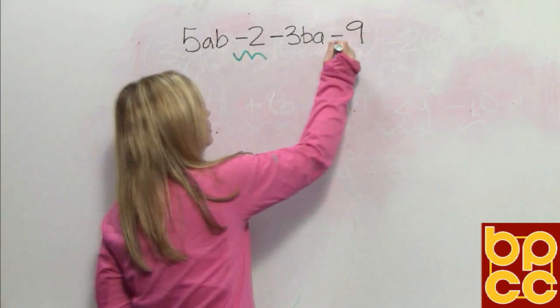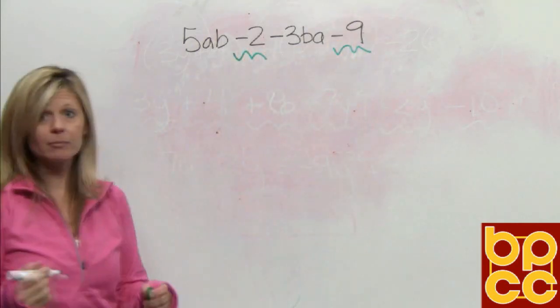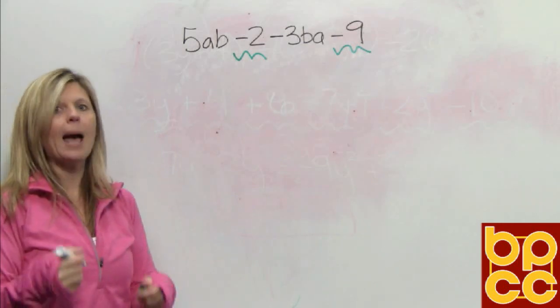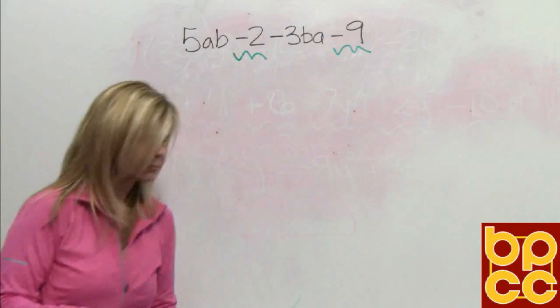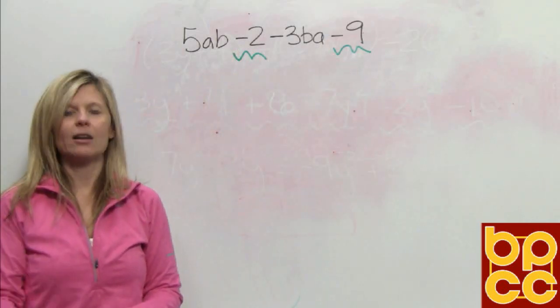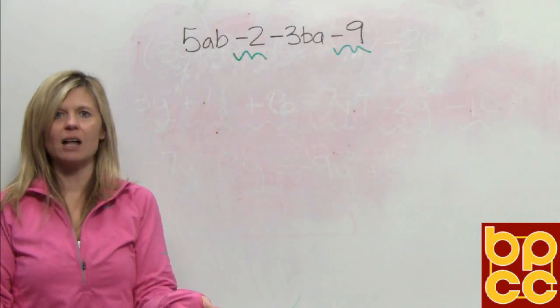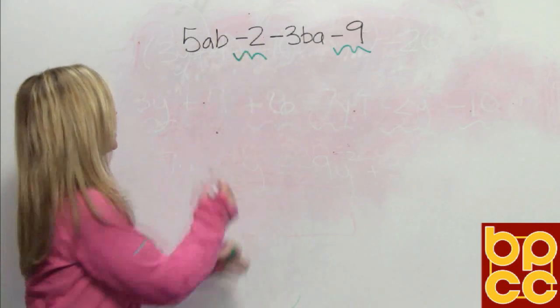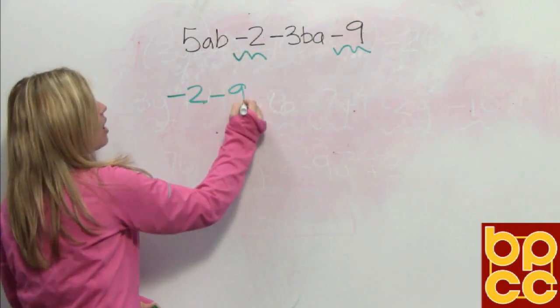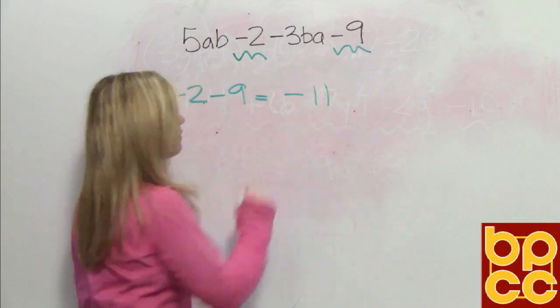We have negative 2 and negative 9. And if you take a negative 2 and put it with a negative 9, you would add it because they're the same sign. Think of it this way. I lost $2. I lost $9. Well, how much did you lose? You lost $11. So negative 2 and negative 9 would make negative 11 if you put them together.